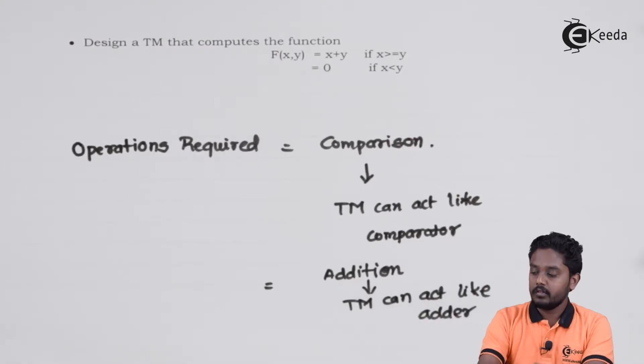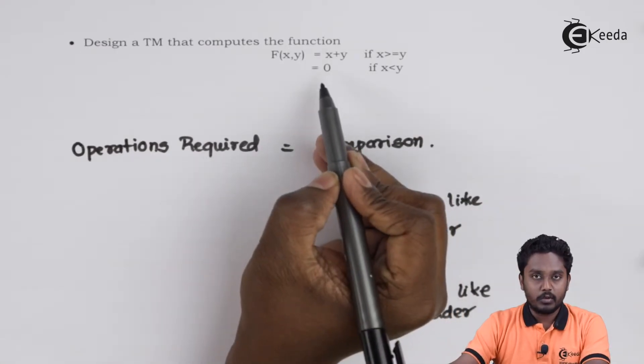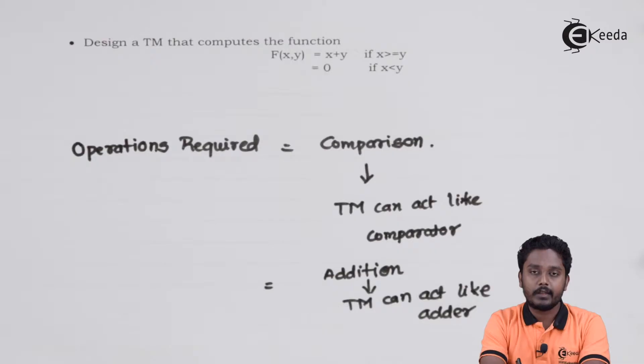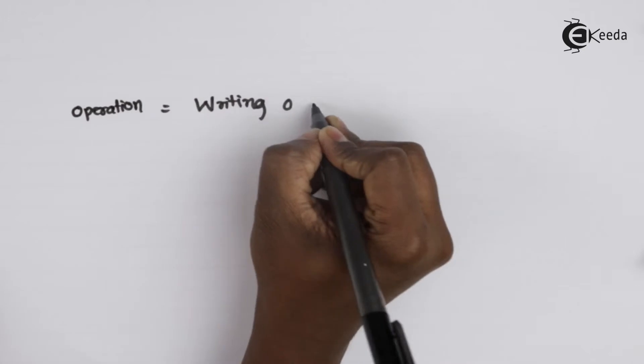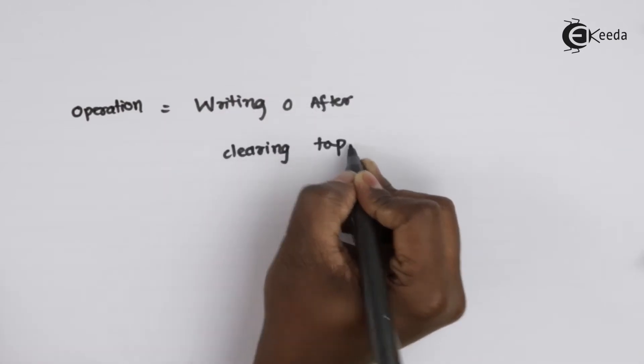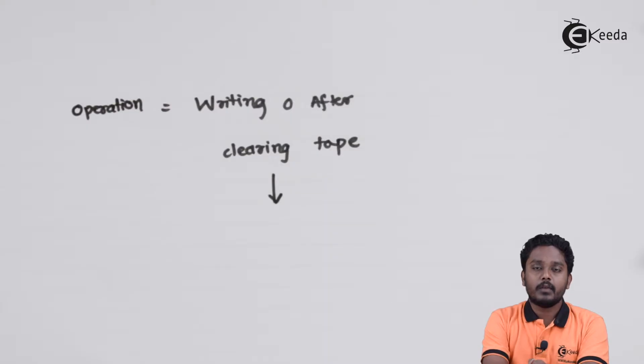One more operation that is required is writing 0 onto the tape in case x is less than y. That means it will erase all the contents of the tape and make sure that there is only one symbol, that is 0. For that, we need a Turing machine which would act like an eraser. As we have seen in many examples, it's easy to see that TM can easily erase all the content by putting a blank onto every 0, 1, whatever symbol is encountered. Along with that, at the end, it can put a 0. So we can say TM can act like an eraser.